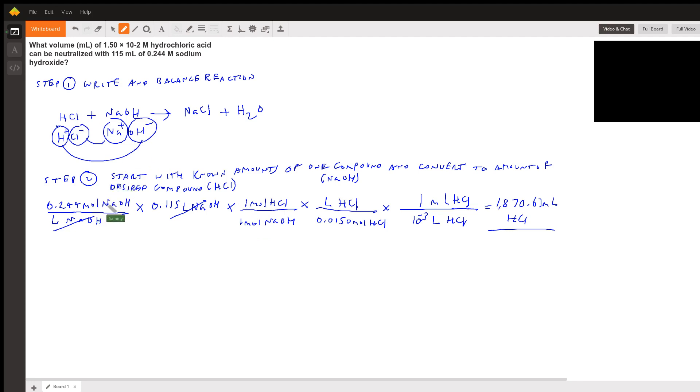The next step is we need to take this molarity, which is 1.50 times 10 to the negative 2, or 0.0150 molarity. We're going to put the moles on the bottom and the liters on the top so that the moles of HCl will cancel out, and we're left with liters.